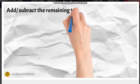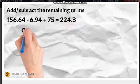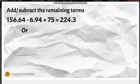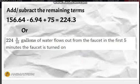Combine the similar and remaining terms and we will get 224.3 or about 224 gallons of water that flows out from the faucet in the first 5 minutes the faucet is turned on. Wow!